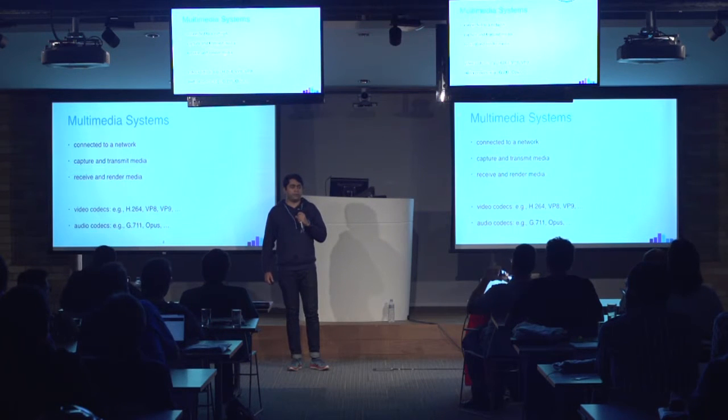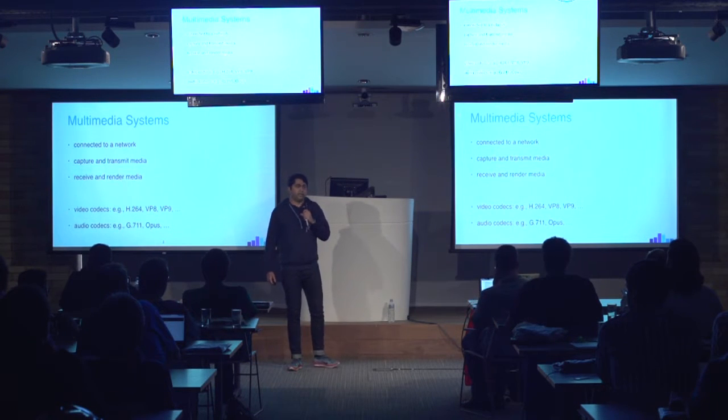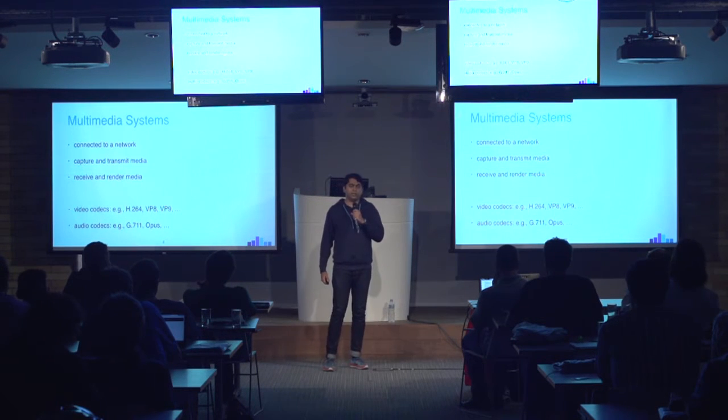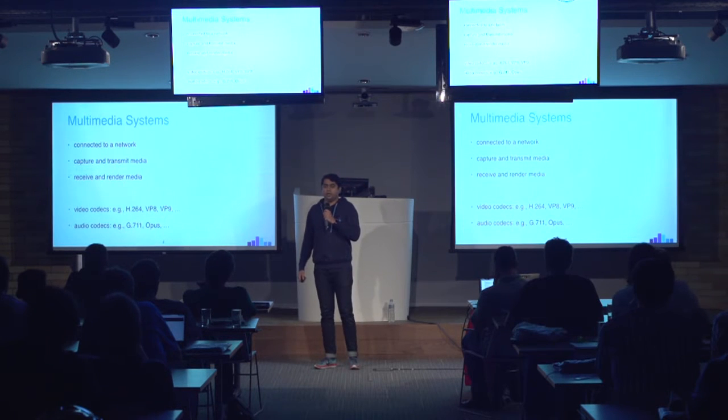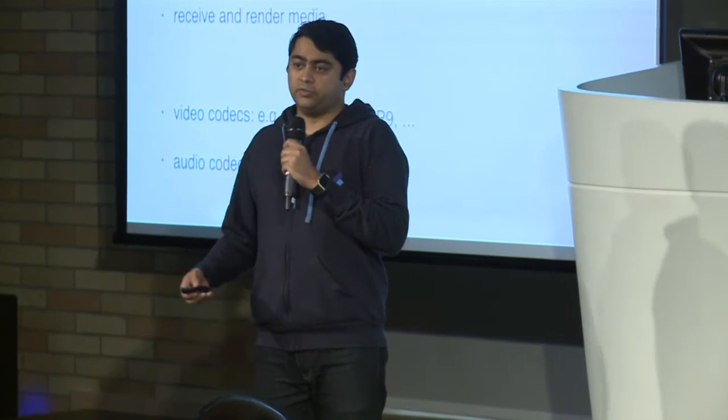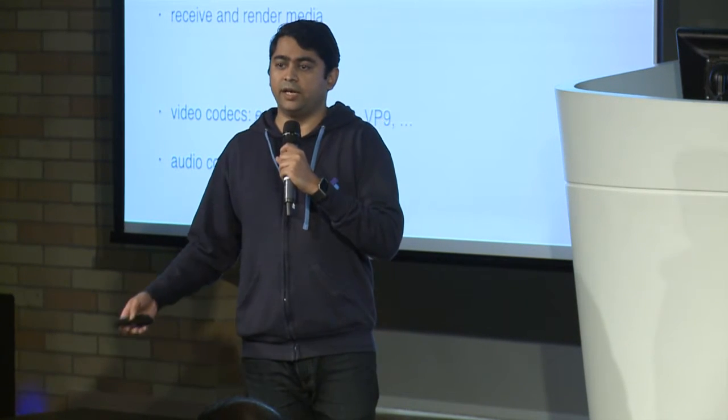When we talk about multimedia systems, especially like WebRTC, there are things that the multimedia system needs to do. It needs to capture audio and video. These come in a couple of codecs. For video, you have H.264, VP8, VP9, and more codecs in the future. For audio, there is G711, G722, and Opus. Typically, an endpoint captures the audio and video frames, then packetizes them, and sends them over the network.